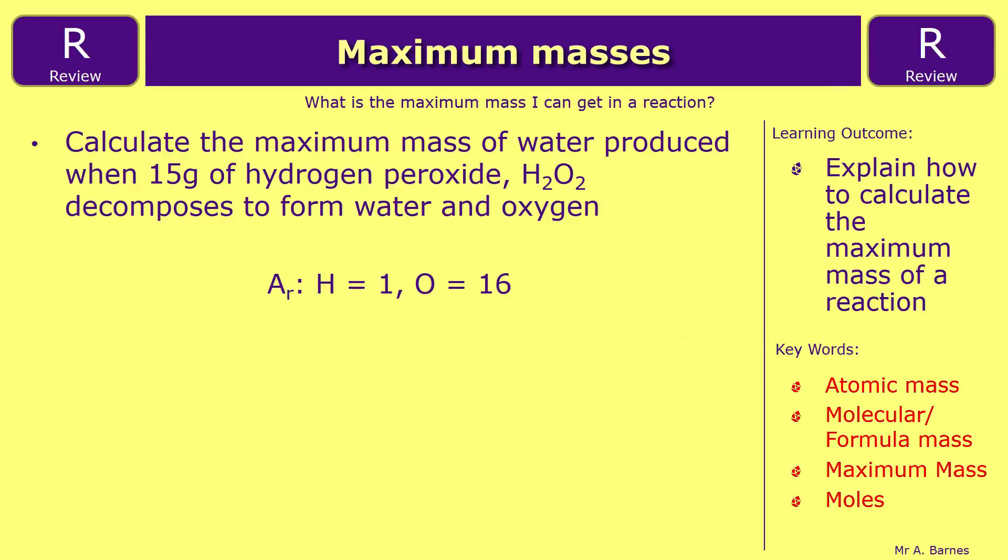Okay, so the review for this section then is calculate the maximum mass of water produced when 15 grams of hydrogen peroxide, H2O2, decomposes to form water and oxygen. So in this one, you'll have to put the balanced equation, and then you'll work it out from there. And that ends this video.